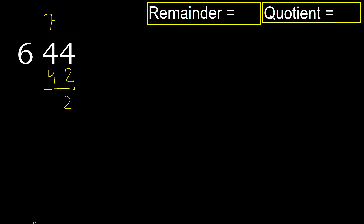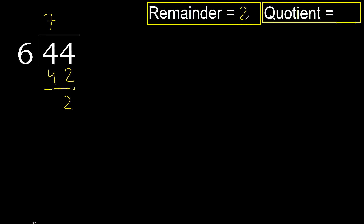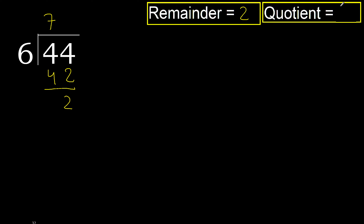There are no more digits, so we finish. The remainder is 2 and the quotient is 7.